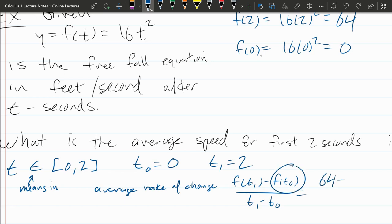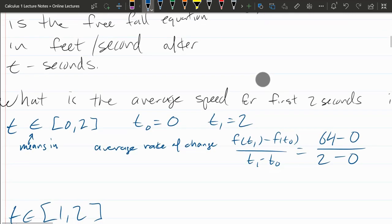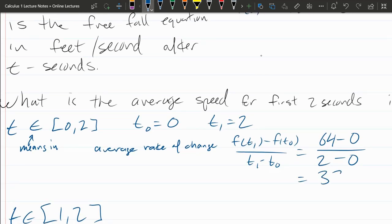f of t0, that's f of 0, and you can see again t0 is labeled right here, f of 0 is labeled right here, and that's going right in for that. So you should be able to see all of this on your paper matching up. So that's minus 0 divided by t1, that's 2, minus t0, which is 0.